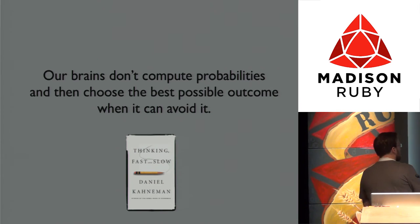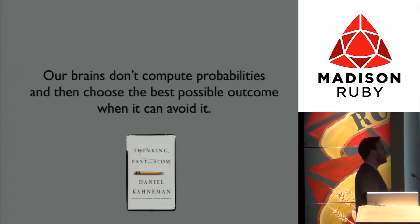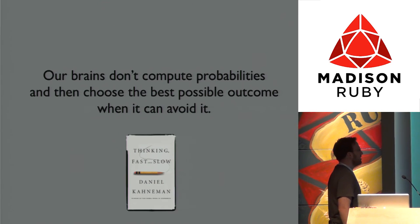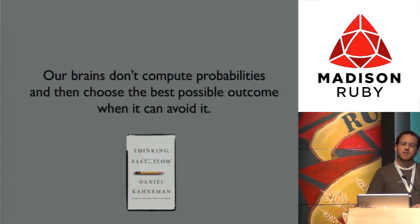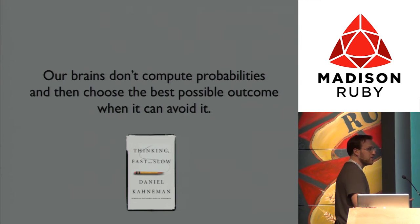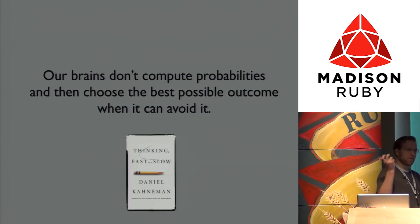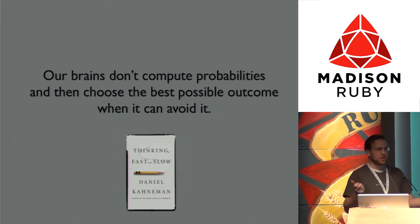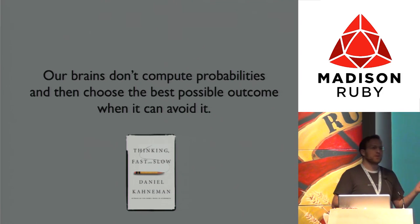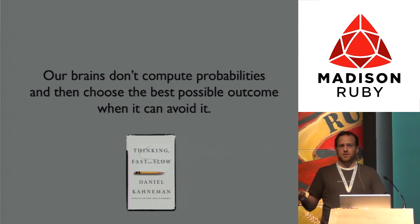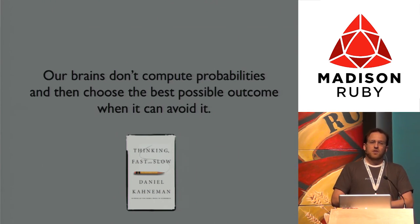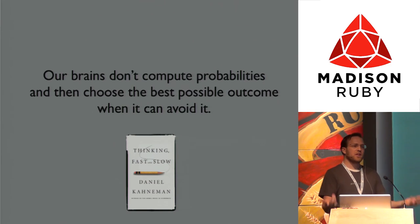Daniel Kahneman wrote this book 'Thinking, Fast and Slow.' He points out in a number of situations that our brains don't compute probabilities and then choose the best possible outcome when it can avoid it. There's the slow part of our brain and the fast part of our brain. The fast part I'm going to call our intuition, and the slow part I'm going to call our critical thinking.